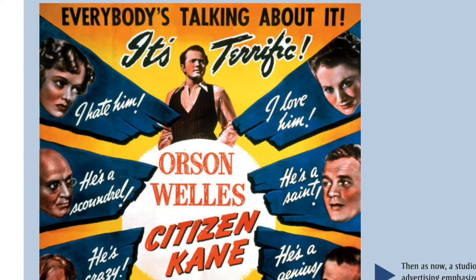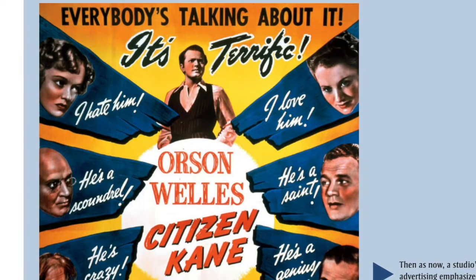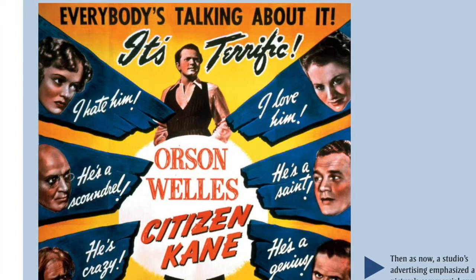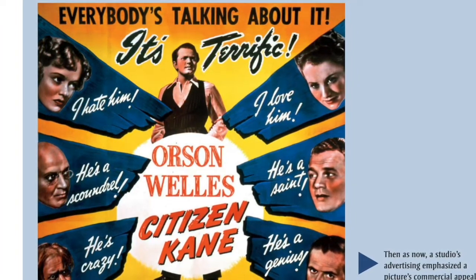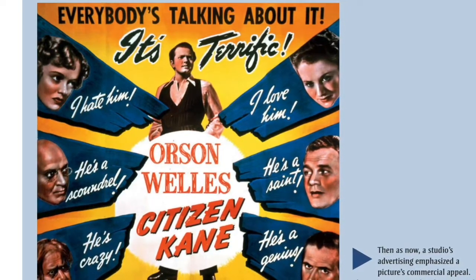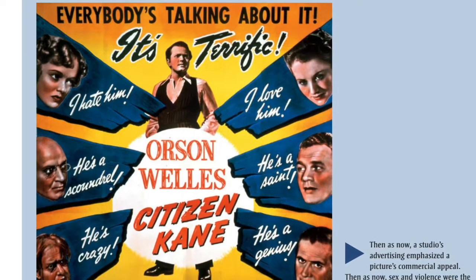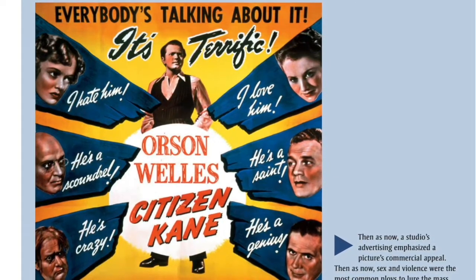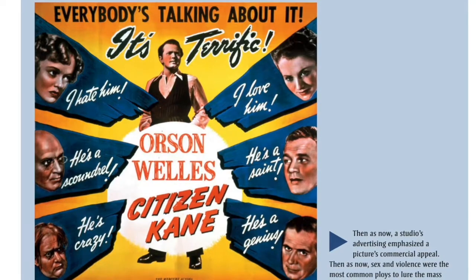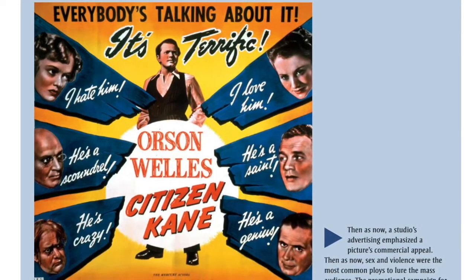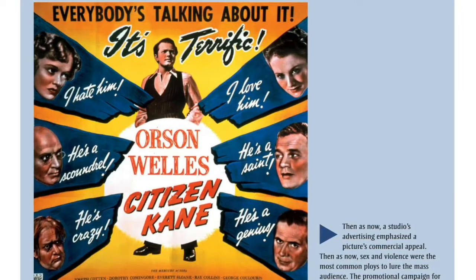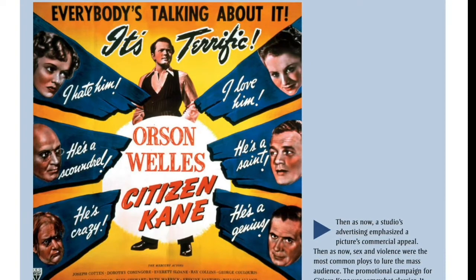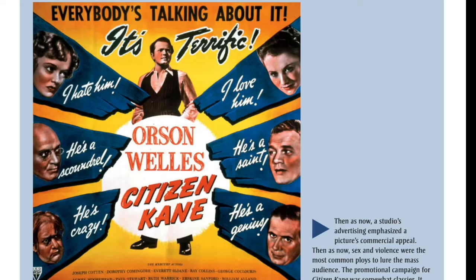12-25: Promotional poster for Citizen Kane. Then as now, a studio's advertising emphasized a picture's commercial appeal; then as now, sex and violence were the most common ploys to lure the mass audience. The promotional campaign for Citizen Kane was somewhat classier — it stressed Welles' box office appeal as the film's star and the controversy surrounding the picture's release. Posters and lobby displays also exaggerated the love angle: 'I hate him,' Susan proclaims; 'I love him,' Emily counters. Neither statement is in the movie. Interestingly, this poster crudely parallels the multiple points of view found in the film itself.